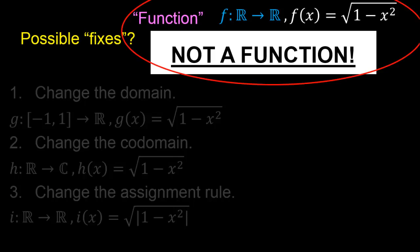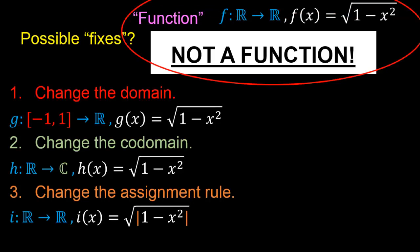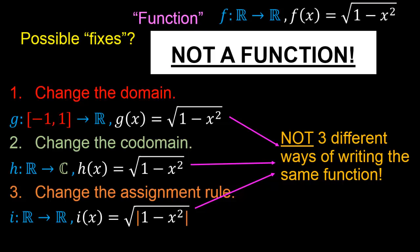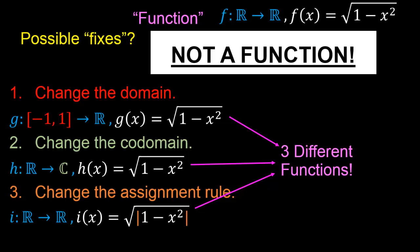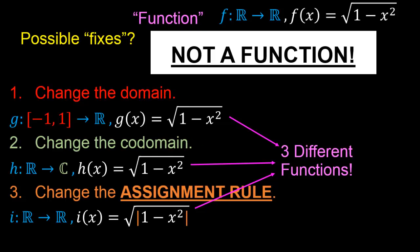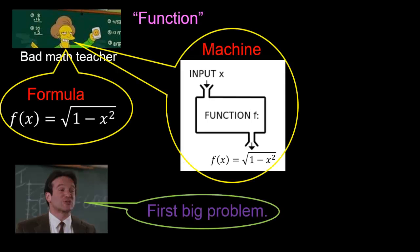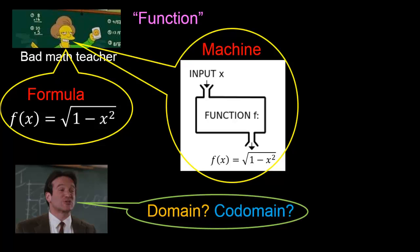So previously we had something called f, but which was not a function at all. In contrast, what we've just done is construct three proper functions g, h, and i. It is very important to note that g, h, and i are not merely three different ways of writing the same function — instead, they are three completely different functions. The very important point is that when talking about functions, we need to specify three things: the domain, the co-domain, and the assignment rule. It is not sufficient to just talk about the assignment rule, as we saw with the supposed function f. So the first big problem with the bad math teacher's view is that it completely omits any mention of what the domain and co-domain are.